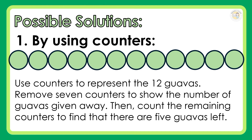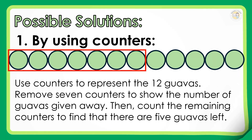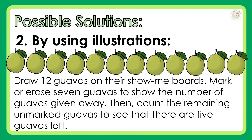Possible solutions. First, by using counters: use counters to represent the 12 guabas. Remove 7 counters to show the number of guabas given away. Then, count the remaining counters to find that there are 5 guabas left. Second, by using illustrations: draw 12 guabas on the show me boards. Mark or erase 7 guabas to show the number of guabas given away. Then, count the remaining unmarked guabas to see that there are 5 guabas left.